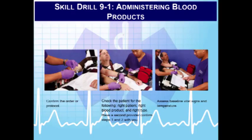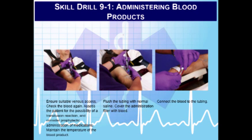Once you have the order, confirm the right patient, right blood product, and right type. Always have a second provider — another paramedic, nurse, or physician — verify the patient identification. Have at least two IV lines: 18-gauge is preferred but 20-gauge works. The second IV line is important because you cannot infuse anything else through the line running blood. Use only 0.9% normal saline — D5W causes hemolysis and lactated Ringer's causes clotting.